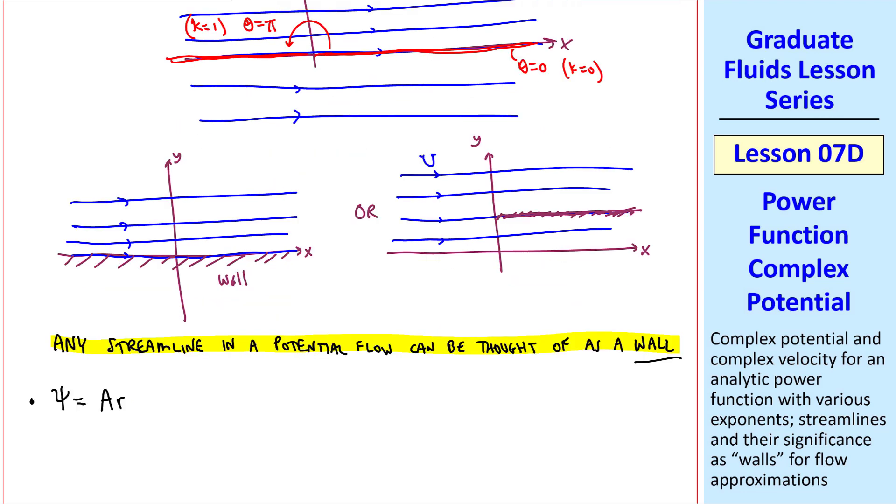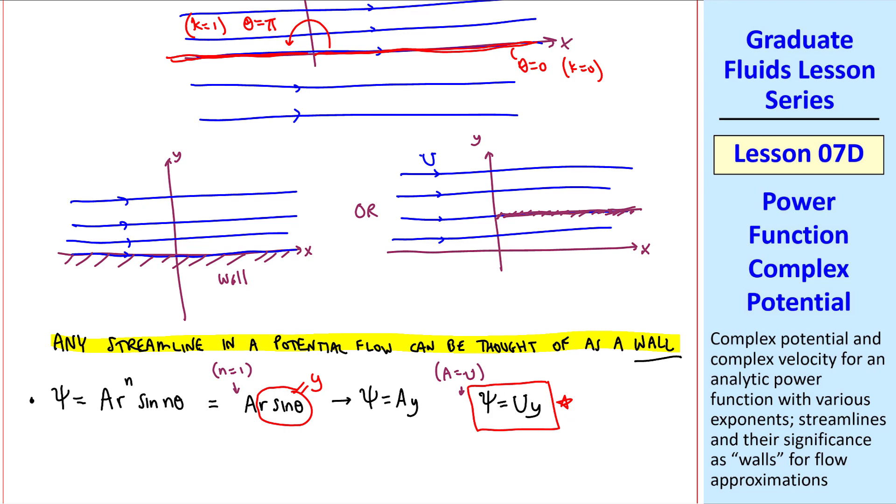By the way, since psi equal a r to the n sine n theta, and we're looking at the case where n equal 1, psi is equal to a r sine theta, but r sine theta is y, so psi equal a y. And when a equal u, psi equal u times y, which agrees with our previous equation for psi for a uniform stream. We also see that different values of psi form different streamlines, where y would be some constant along a constant value of psi.